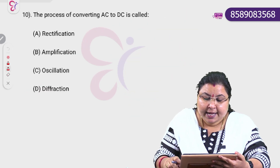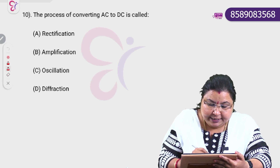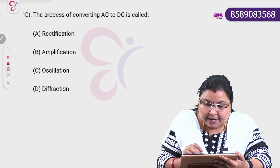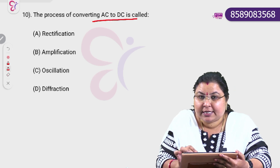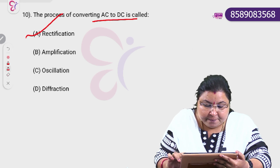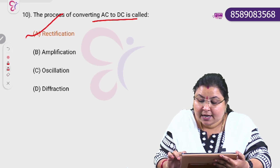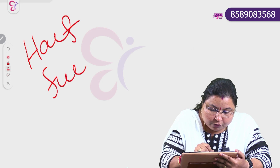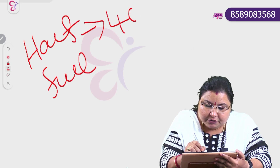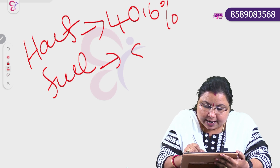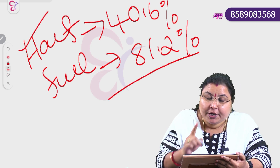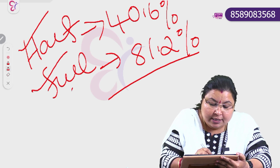The process of converting AC to DC is called — A: Rectification, B: Amplification, C: Oscillation, D: Diffraction. The correct answer is Rectification. We use a diode — half wave rectifier has efficiency of 40.6%, while a full wave rectifier has efficiency of 81.2%.